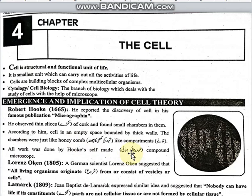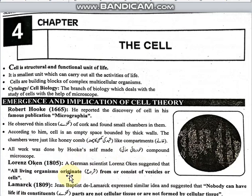All this work was done by Robert Hooke using his self-made compound microscope. The next scientist is Lawrence Hawken, who suggested that all living organisms are organized from or consist of vesicles and cells.